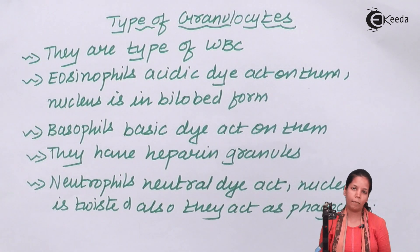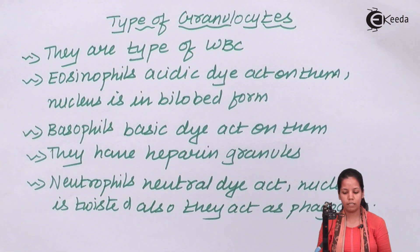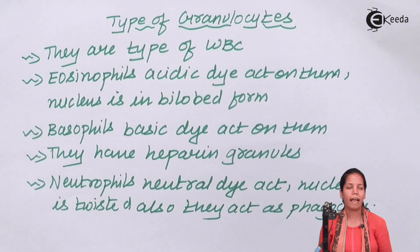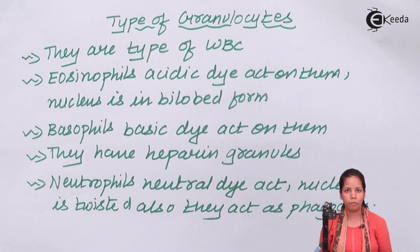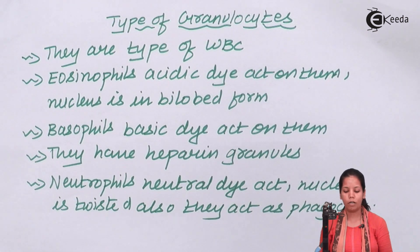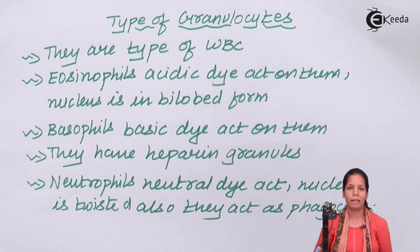Eosinophils are another type of granulocyte. Acidic dyes act on them, and they have a bilobed nucleus. Finally, neutrophils are acted upon by neutral dyes.